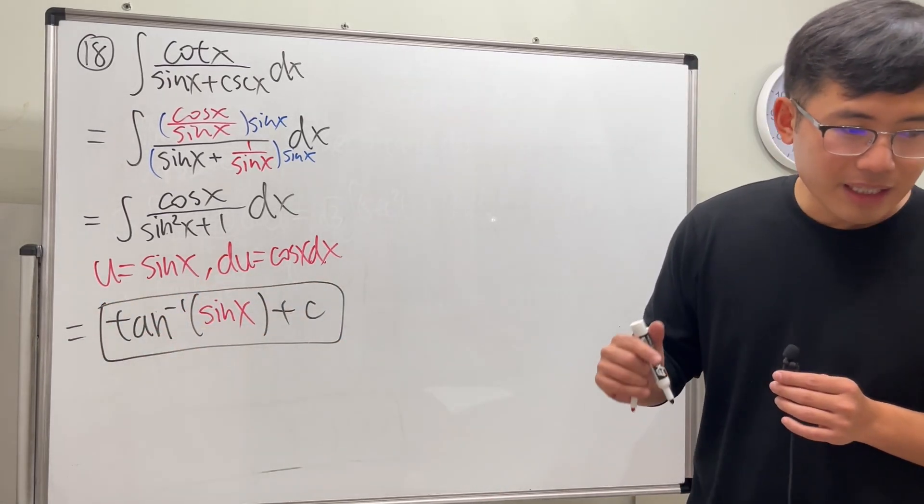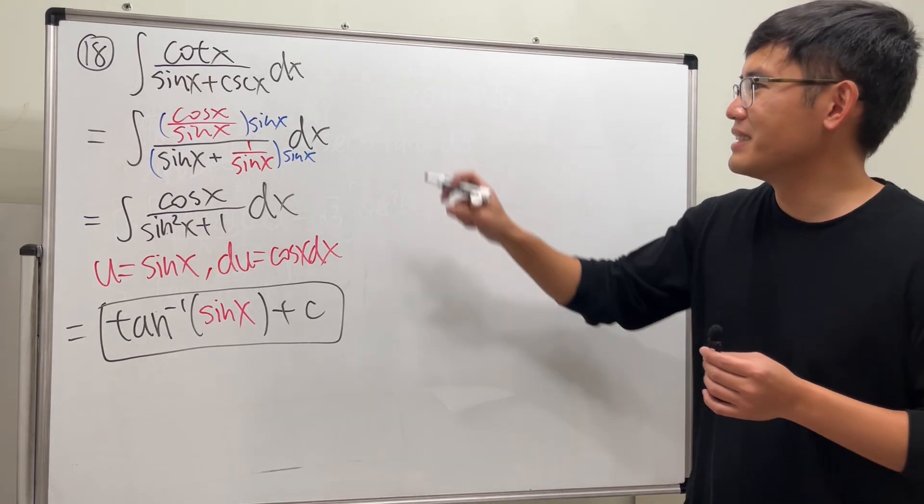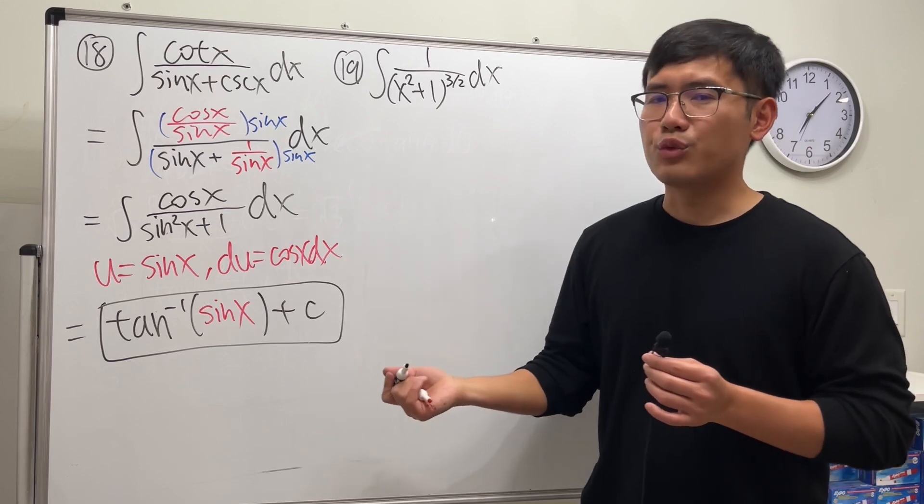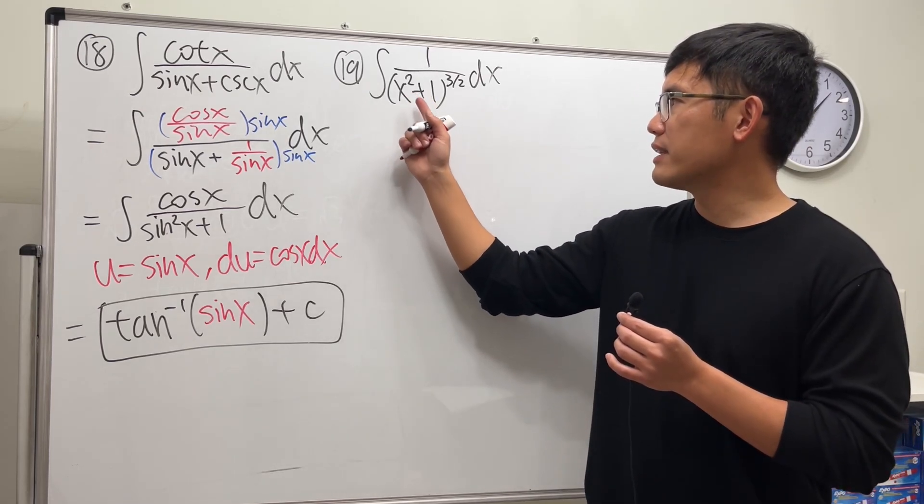Good, number 19. I prepared something very special for you guys. The 3 over 2 power right here is like the radical, right, the square root, and inside we have x squared plus 1.